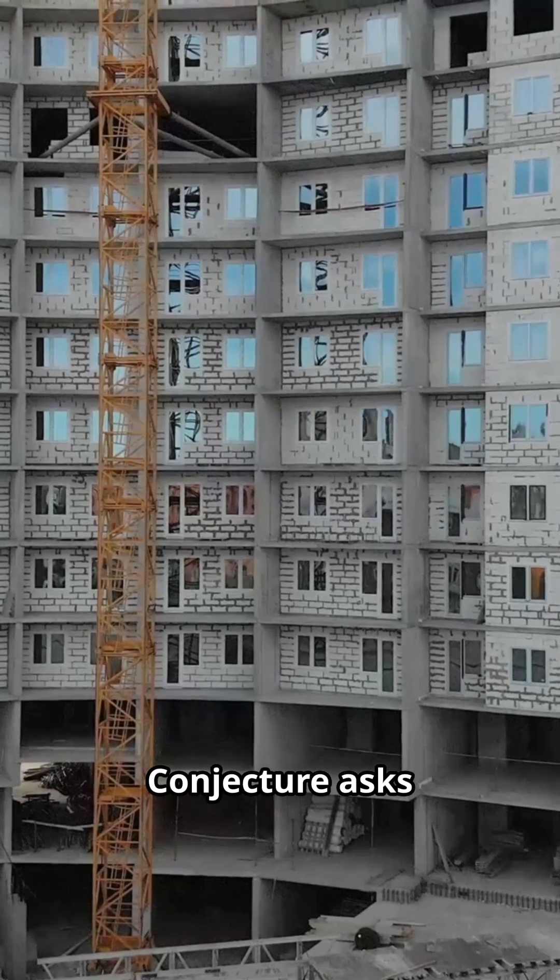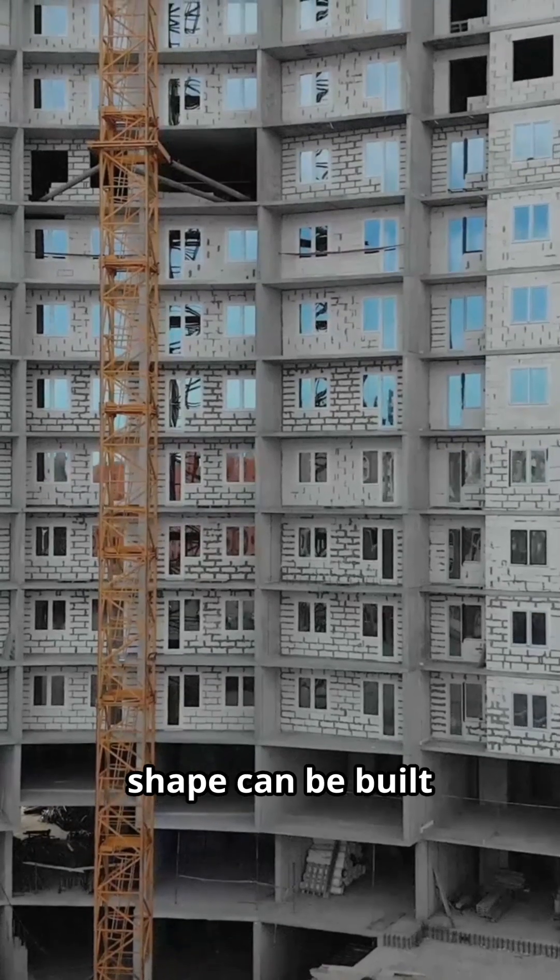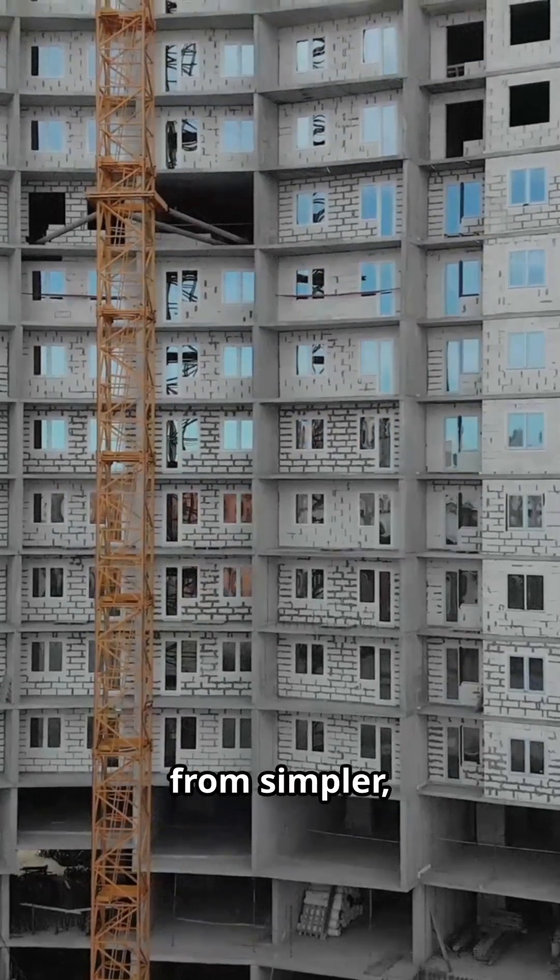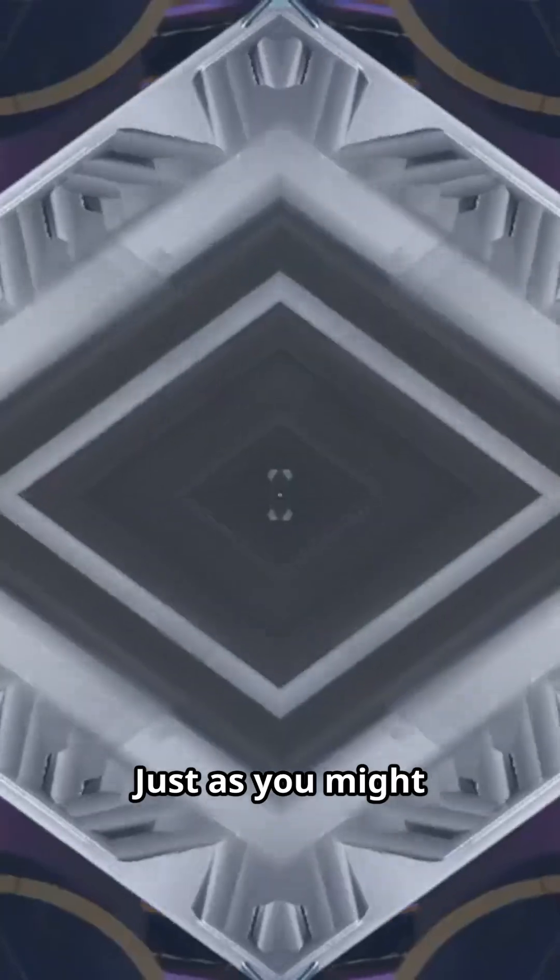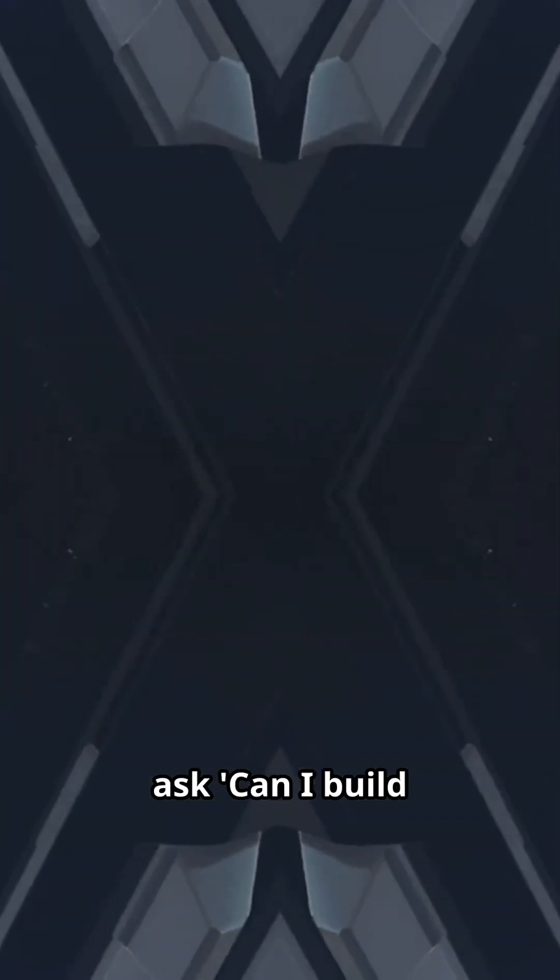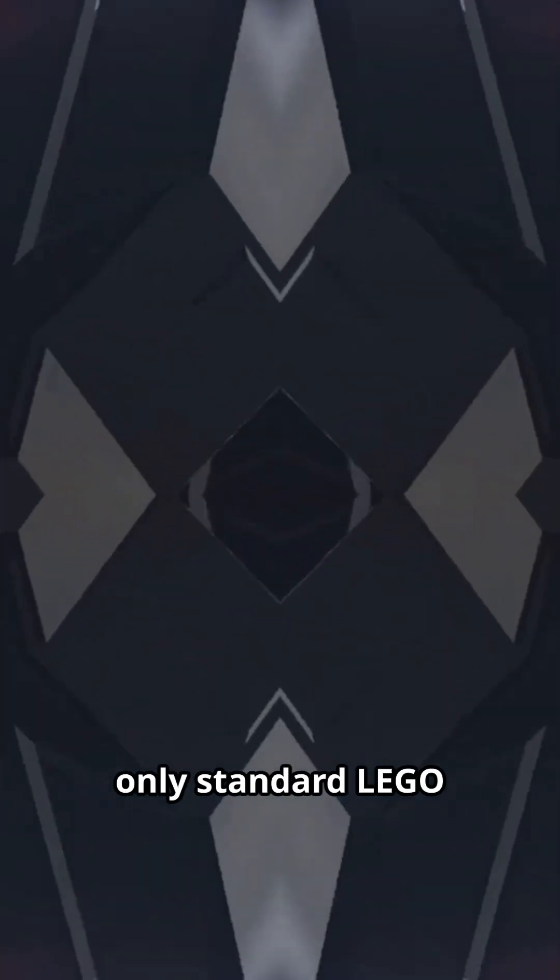The Hodge conjecture asks whether every complex mathematical shape can be built from simpler, more fundamental pieces, just as you might ask, can I build this castle using only standard Lego bricks?